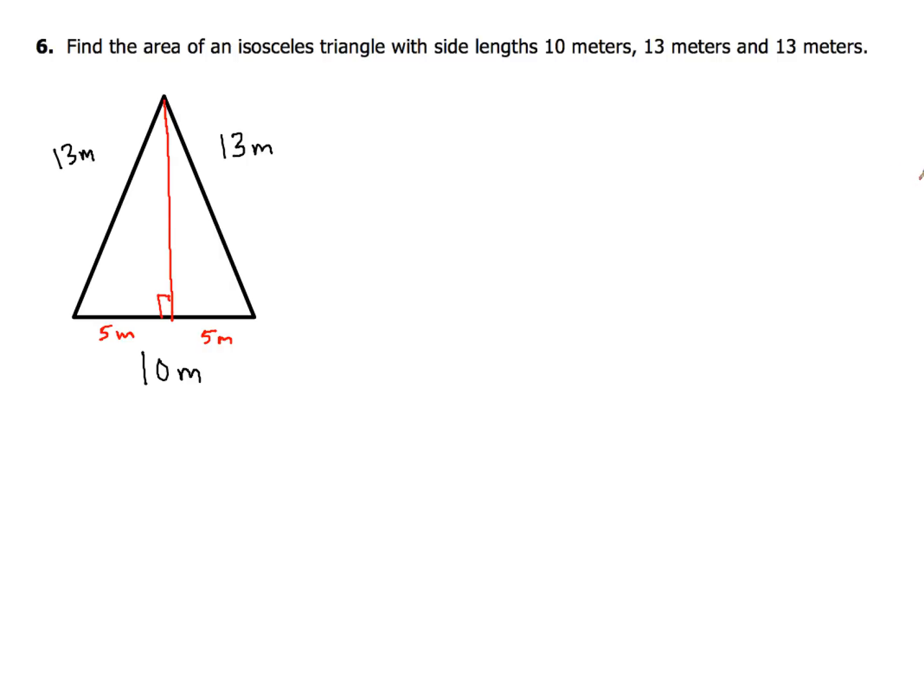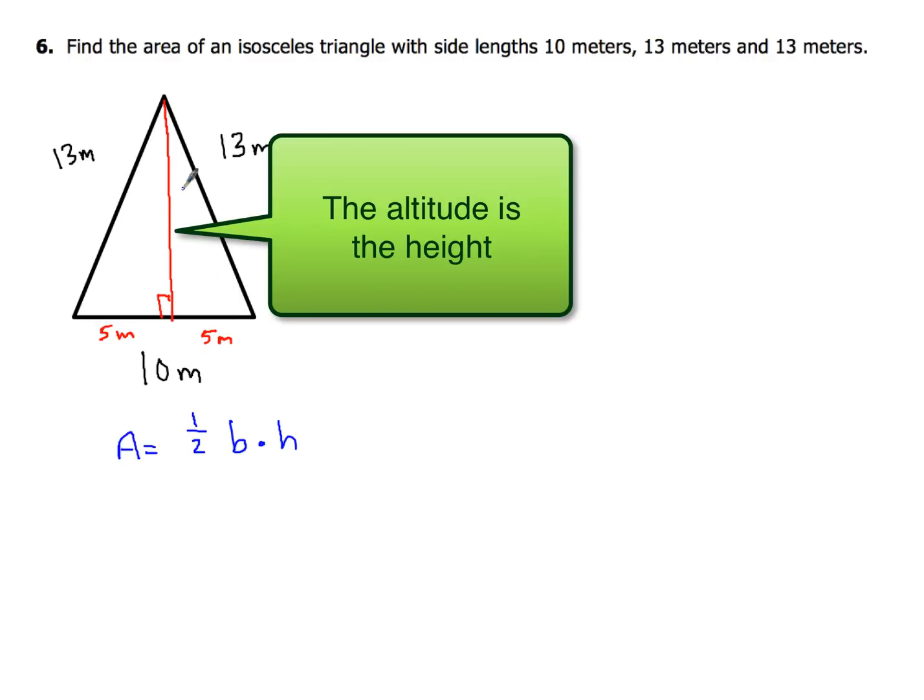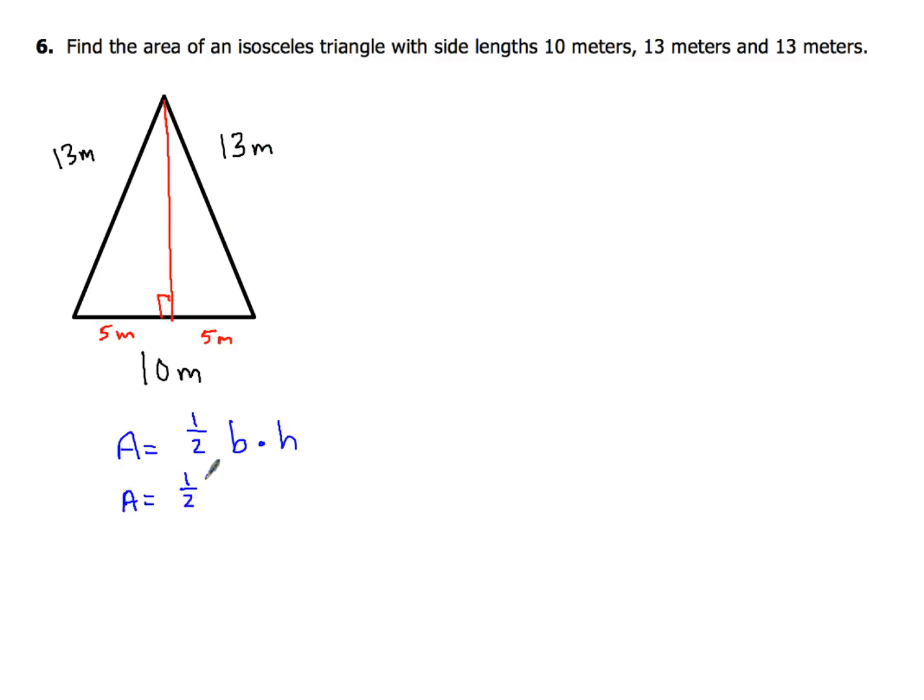Now to find the area of the triangle, I got to use this formula for area of a triangle. And that is area is one half the base times the height. Now I don't know what the height is yet. That's an altitude that I just drew. And I know the base is 10. So I can kind of start this off a little bit. I've got one half of 10 times the height. But I don't know what the height is. So let's get after that.